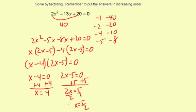So the two answers, in increasing order, let's see, 4 is bigger than 5 halves. So I'm going to have x equals 5 halves, comma 4. OK, and those are your answers.